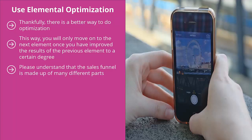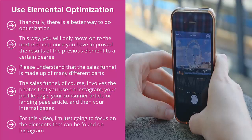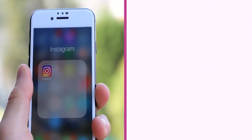The sales funnel is made up of many different parts, each with different elements, but they can all be broken down into some common elements. The sales funnel involves the photos you use on Instagram, your profile page, your consumer article or landing page article, and your internal pages. Each of these has to be optimized and each has separate elements within it. For this video, I'm just going to focus on the elements found on Instagram. You can use the same element-by-element analysis to optimize your squeeze page, consumer guide page, and other elements on your own website.